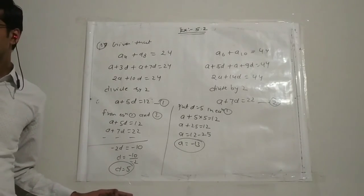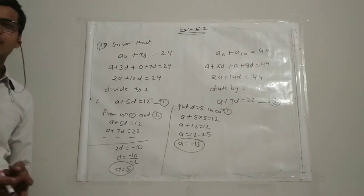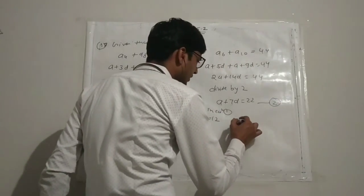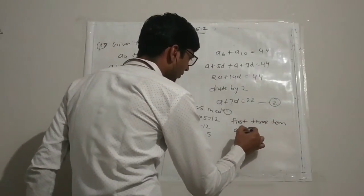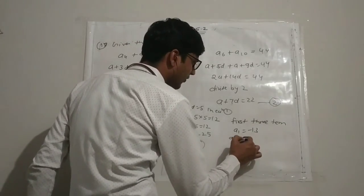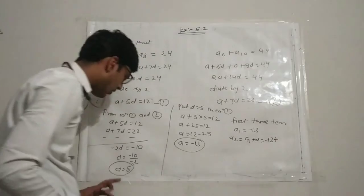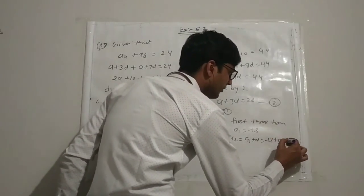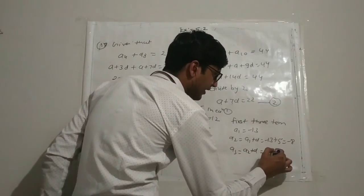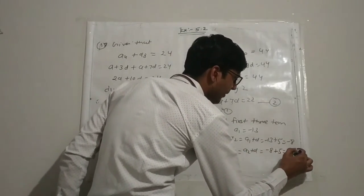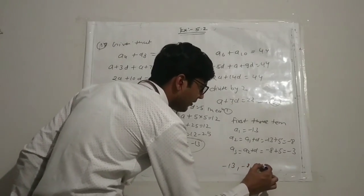With a equals minus 13 and d equals 5, we can write the AP. A1 equals minus 13, A2 equals minus 13 plus 5 equals minus 8, and A3 equals minus 8 plus 5 equals minus 3. So the first three terms are minus 13, minus 8, minus 3.